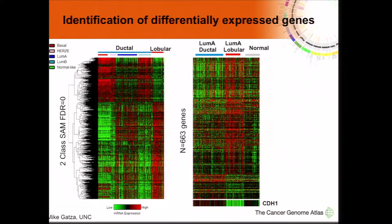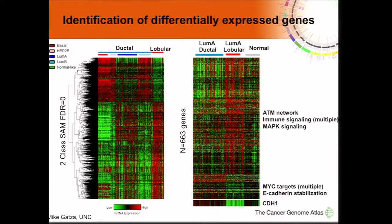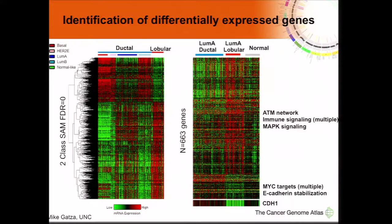E-cadherin loss is a characteristic of this disease — it's either lost at the RNA level or mutated in almost all samples. By DAVID analysis, lobular tumors show upregulation of ATM network signaling, a large number of immune signaling pathways, and MAP kinase signaling, whereas ductal tumors show upregulation of MYC target pathways and E-cadherin stabilization.